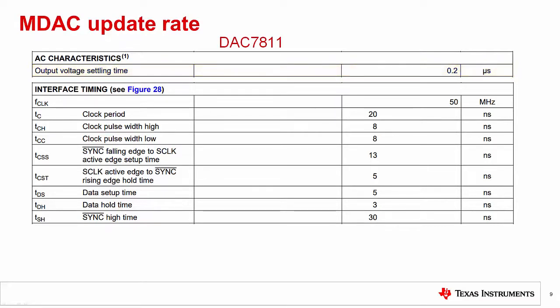In the timing table, we can find all the values required to calculate the minimum update time for its SPI interface. Doing that, we find that it will take a minimum of 353 nanoseconds. So for this device, the update rate will be limited by the SPI interface.